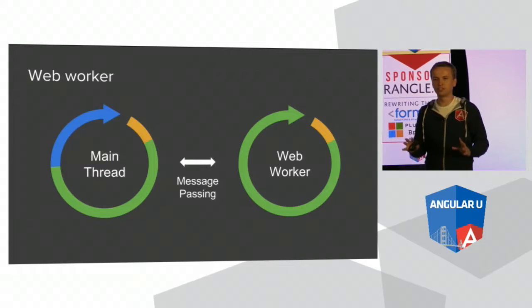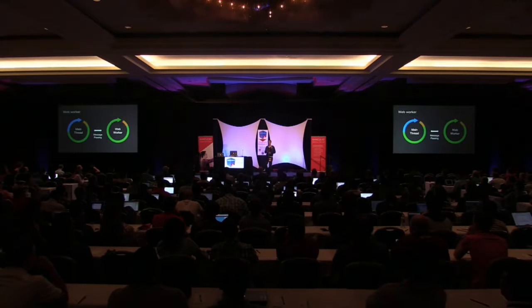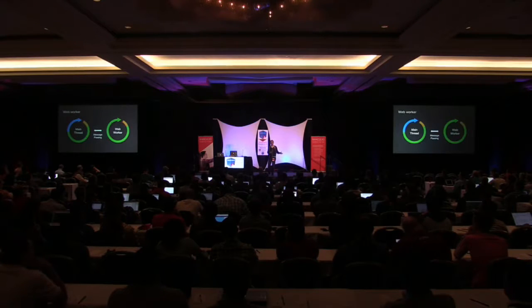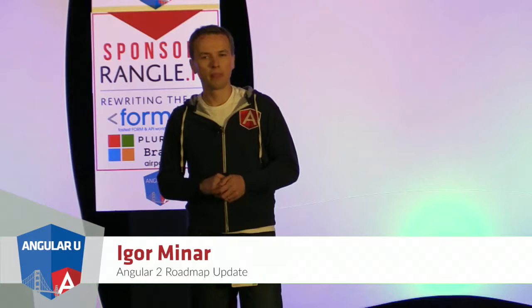You might wonder: web workers and parallelization look awesome — why are we not using it already? The answer is that there are many restrictions. From the web worker context, we have no access to DOM. We receive all inputs through DOM and render changes to the user through DOM, so not having DOM access in a web worker is a big deal. Additionally, if the web worker wants to render something, the only way to do it is to send a message to the main thread using an asynchronous message passing protocol. Most applications today are based on synchronously responding to user events, and adding asynchronous communication adds complexity. That's why most applications today are not using web workers to their full potential.